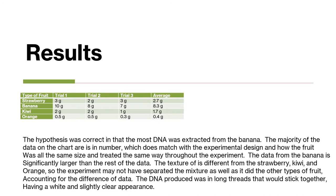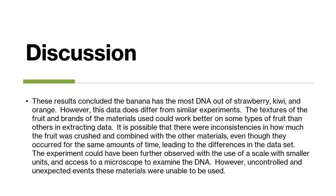The hypothesis was correct in that the most DNA was extracted from the banana. The majority of the data on the chart are similar in number, which does match with the experimental design and how the fruit was all the same size and treated the same way throughout the experiment. The data from the banana is significantly larger than the rest of the data. The texture of the banana is different from the strawberry, kiwi, and orange, so the experiment may not have separated the mixture as well as it did with other types of fruit, accounting for the difference in data. The DNA produced was in long threads that would stick together, having a white and slightly clear appearance. These results concluded that the banana had the most DNA out of the strawberry, kiwi, and orange.